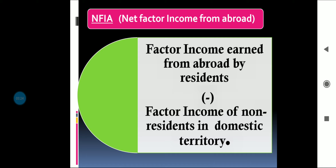NFIA stands for net factor income from abroad. It is the difference between factor income earned from abroad by residents of the country and factor income earned by foreigners in our country. For example, a Russian embassy located in India is not part of India's domestic territory — it is part of Russia's domestic territory. Russian workers employed there have their salary deducted from India's national income, while Indians working in the Russian embassy have their salary added. The difference between these constitutes the net factor income from abroad.